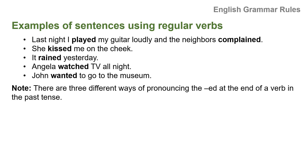Now let's look at examples of sentences using regular verbs. Last night I played my guitar loudly and the neighbors complained. She kissed me on the cheek. It rained yesterday. Angela watched TV all night. John wanted to go to the museum. And remember, there are three different ways to pronounce the -ed ending, which we will study a little bit later.